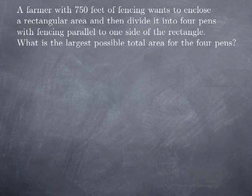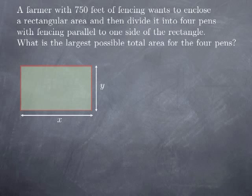Now let's turn to a second example where we follow the same steps, but this time we don't have a symmetry argument to avoid calculus altogether. A farmer with 750 feet of fencing wants to enclose a rectangular area and then divide it into four pens with fencing parallel to one side of the rectangle. We want to know what is the largest possible total area for the four pens.